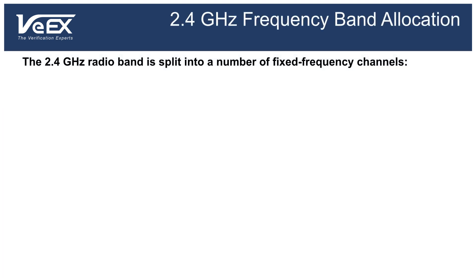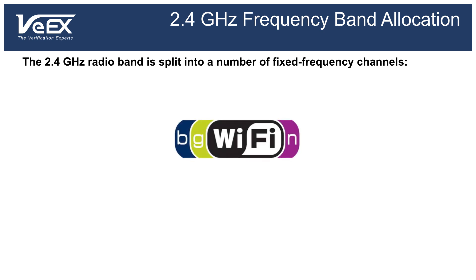The 802.11b, g, and n standards are designed to transmit data over the 2.4 GHz frequency band, using frequencies from 2.4 to 2.5 GHz. The 2.4 GHz frequency band, also called the Industrial, Scientific, and Medical, or ISM band, has been released by the FCC for unlicensed use. This means a lot of different types of equipment can use it without requiring a license.